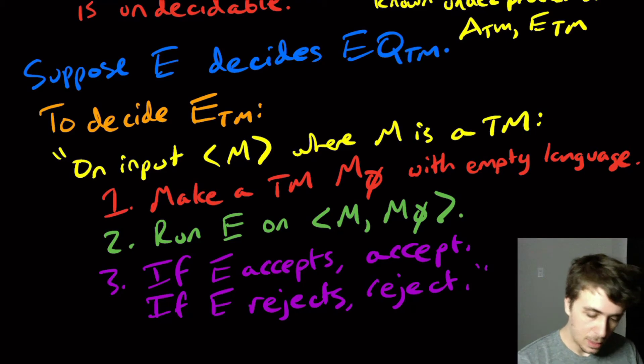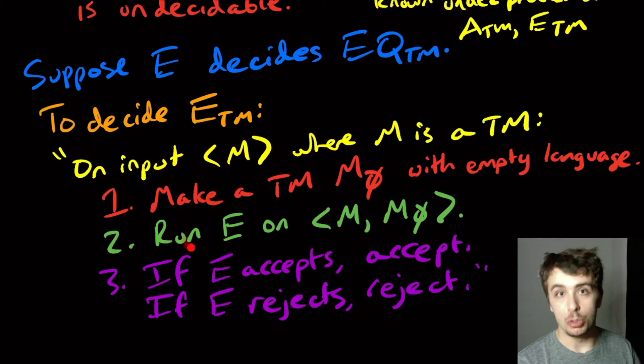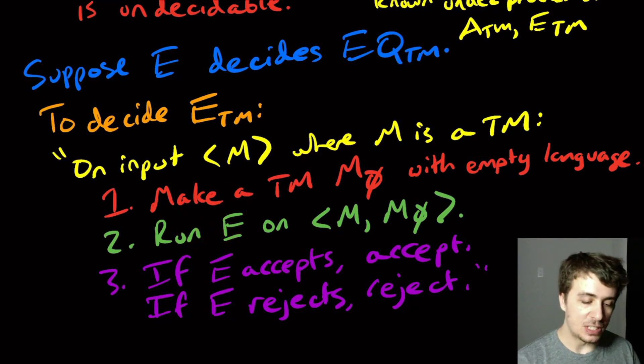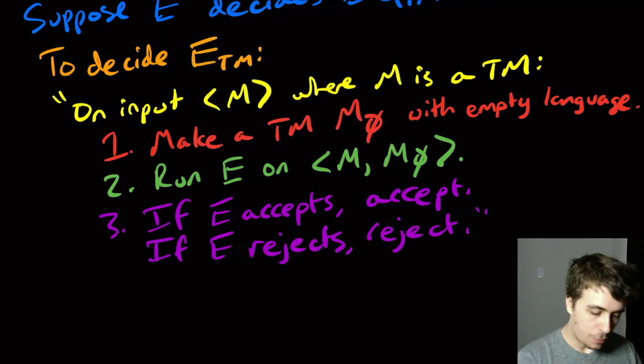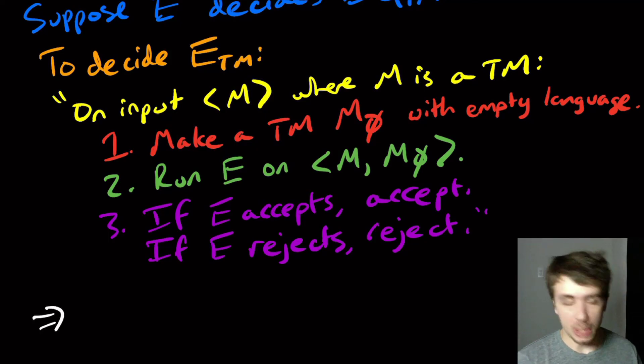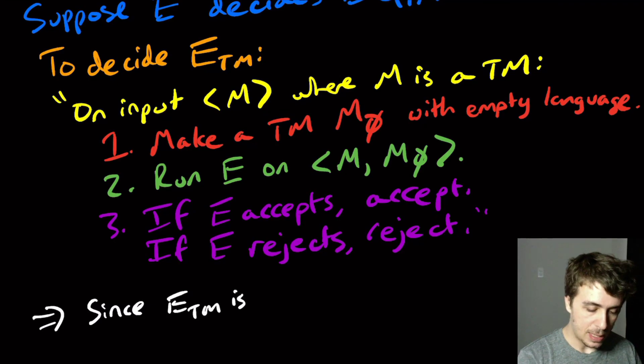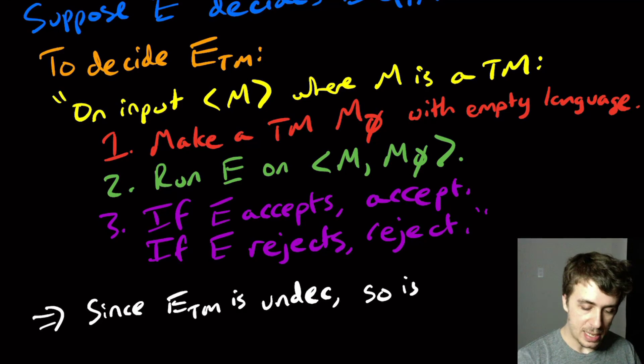Clearly, this thing runs in a finite amount of time, assuming step two can run in a finite amount of time. Therefore, we have decided the emptiness problem, assuming that the equivalence problem is solvable. But unfortunately, the emptiness problem is unsolvable. So since ETM is undecidable, so is EQTM.